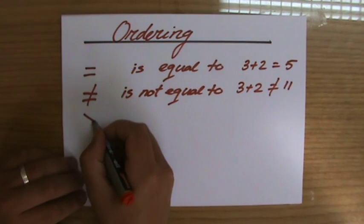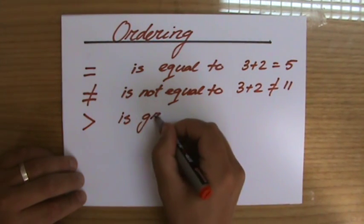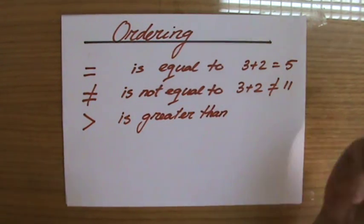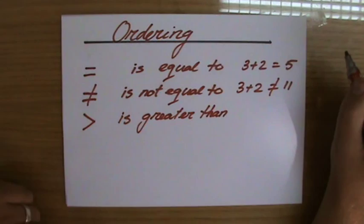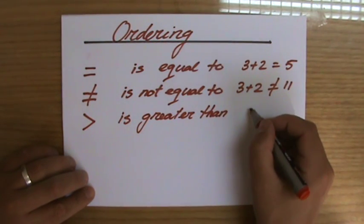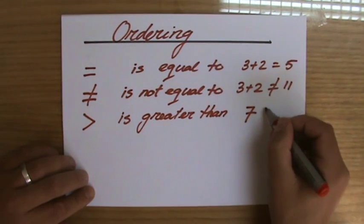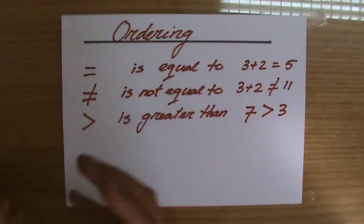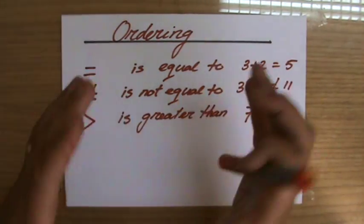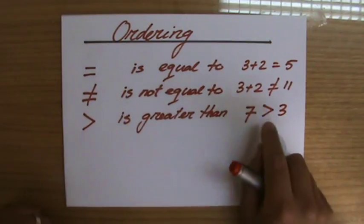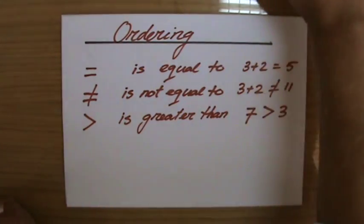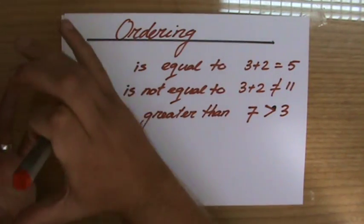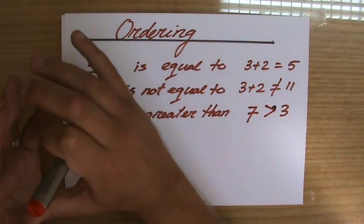Now this sign means is greater than. And you have to be a little bit careful. You can use it for instance like this: seven is greater than three. And the way you can remember that, because my experience is that students sometimes are not sure how to use this sign, is that it looks like a crocodile if you like. You can put the eyes here. It's like a crocodile and the crocodile always eats the larger number because it's a very greedy animal. So seven is bigger than, is greater than, is larger than three.